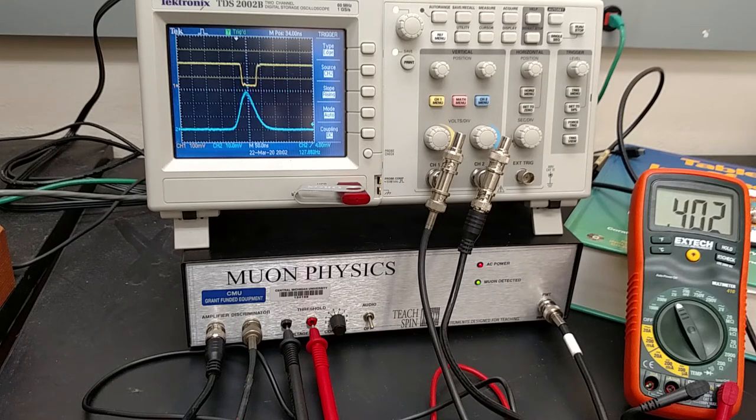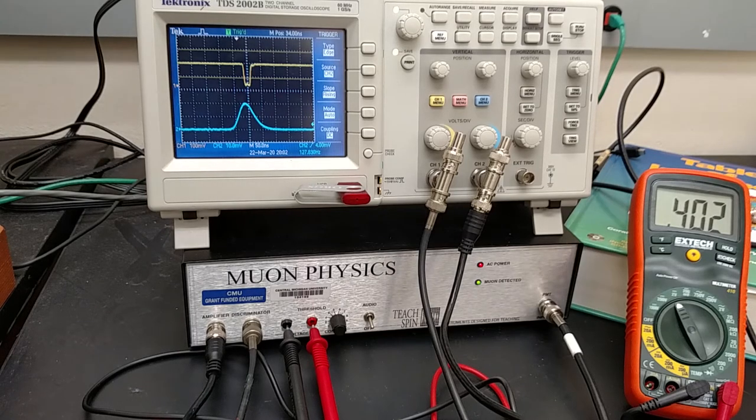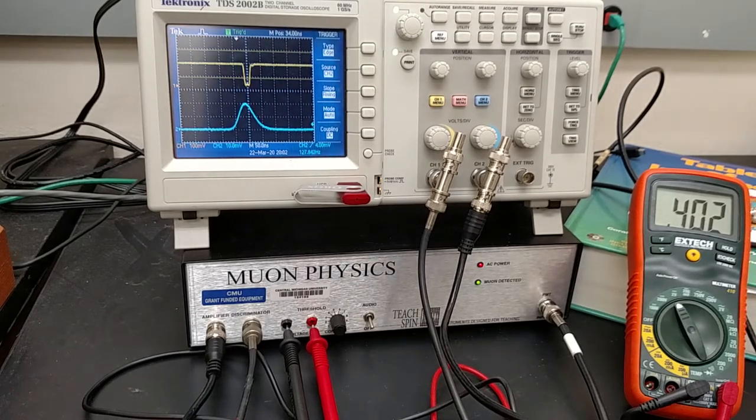That is basically the behavior of the discriminator. It selects a minimum value we need for the output PMT signals to have a time signal generated.